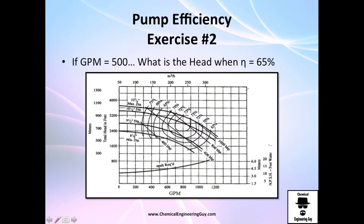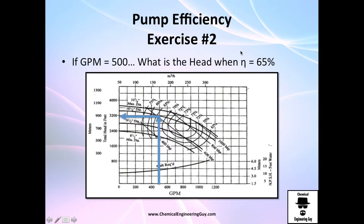Now we can get even more data. For example, if I tell you I operate a 500 gallon per minute process, what will be the head? If my actual operation is about 65% pump efficiency, let me find that pump efficiency line right here — 65%, this line.